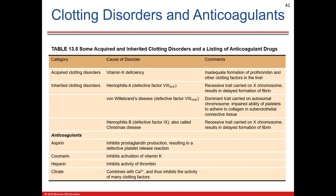Acquired and inherited clotting disorders include vitamin K deficiency. Hemophilia is a genetic loss of a clotting factor. Von Willebrand disease is not uncommon and puts you at risk for stroke. Christmas disease is hemophilia B — a rare condition with too much bleeding and not enough clotting.